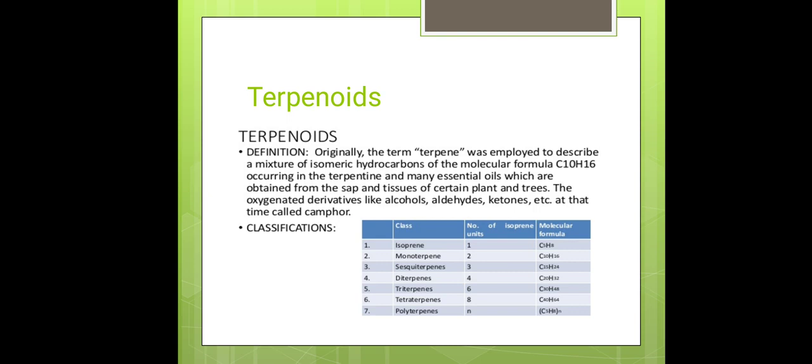The classification of terpenoids: the first is isoprene, then monoterpene, sesquiterpene, diterpene, triterpene, tetraterpene, and polyterpene. The number of isoprene units: isoprene has 1, monoterpene has 2, sesquiterpene has 3, diterpene has 4, triterpene has 6, tetraterpene has 8, and polyterpene has N isoprene units.